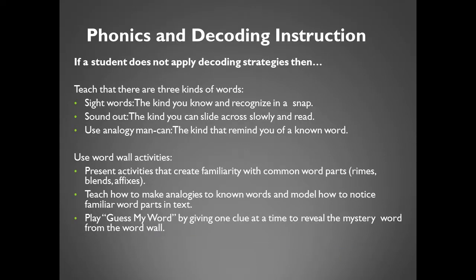If a student does not apply decoding strategies, then teach that there are three kinds of words: cite words — the kind you know and recognize in a snap; sound out — the kind you can slide across slowly and read; use analogy (man, can) — the kind that reminds you of a known word. Use word wall activities. Present activities that create familiarity with common word parts. Teach how to make analogies to known words and model how to notice familiar word parts in text. Play 'Guess My Word' by giving one clue at a time to reveal the mystery word from the word wall.